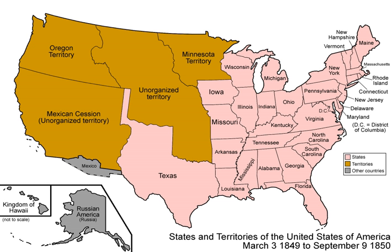The Fugitive Slave Act was essential to meet Southern demands. In terms of public opinion in the North, the critical provision was that ordinary citizens were required to aid slave catchers. Many Northerners deeply resented that requirement to help slavery personally. Resentment towards the act continued to heighten tensions between the North and South, which were inflamed further by abolitionists such as Harriet Beecher Stowe. Her book, Uncle Tom's Cabin, stressed the horrors of recapturing escaped slaves and outraged Southerners.